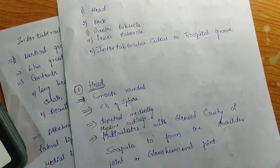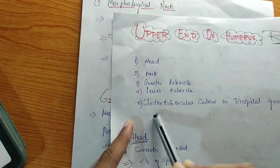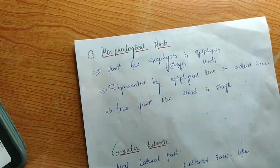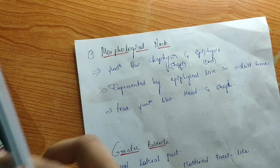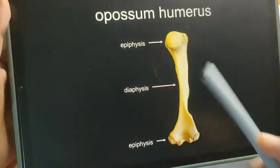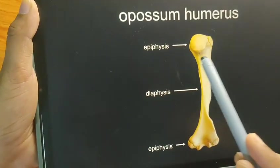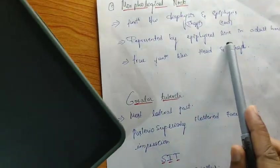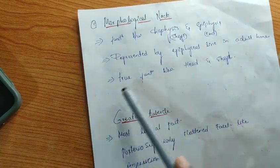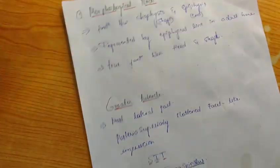For the upper end of the humerus, you need to know all these structures: head, neck, greater tubercle, lesser tubercle, and intertubercular sulcus or bicipital groove. The morphological neck is the junction between the epiphysis and diaphysis. As studied in general anatomy, the epiphysis refers to the ends of a long bone, and the diaphysis is the shaft. This morphological neck represents the epiphysis line in adults — where growth has stopped — and it is the true junction between the head and shaft.